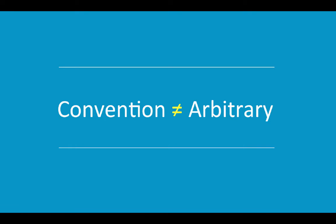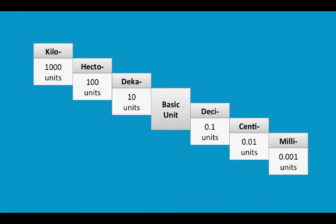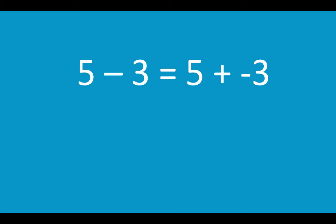Convention doesn't mean arbitrary. Take measurement, for example. We've historically used many different measurement conventions, but let's just look at the metric system. It's an application of our base 10 place value so that it can map really beautifully to our understanding of numbers. It was chosen on purpose, not at random. And in fact, most conventions work this way. They're very specific choices. So let's apply this to the order of operations.